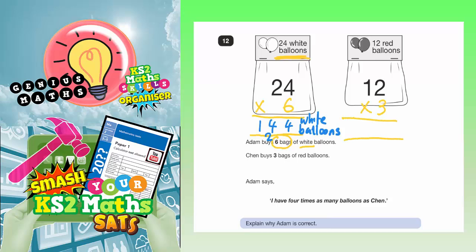Your times table should help you here. Three times 12 is going to be 36. If you can't do that in your head, you can use the column method. Three twos are six, three ones are three. So that's 36 red balloons.